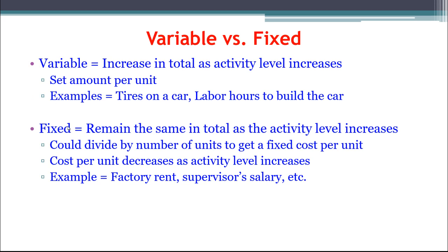Variable costs are those that increase in total as the activity level increases — it's a set amount per unit. For example, tires on a car: if we produce twice as many cars, we need twice as many tires. Variable costs increase in the same direction and proportion as activity. On a per-unit basis, however, the variable cost remains exactly the same — $10 per unit, $15 per unit — no matter what. You simply multiply it by the number of units.